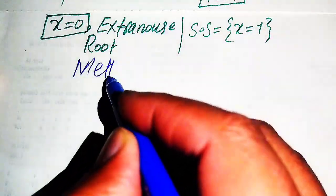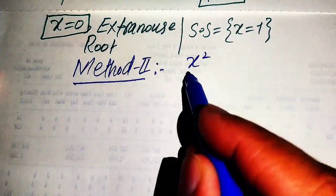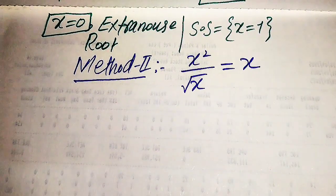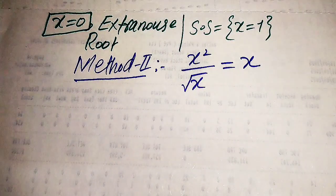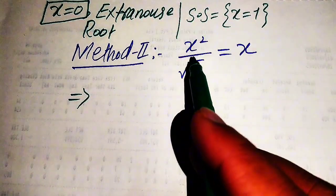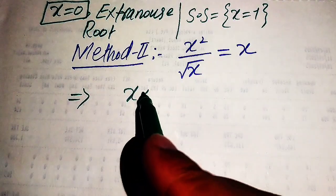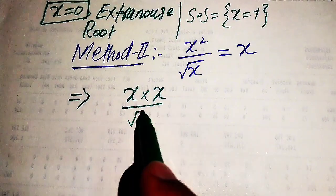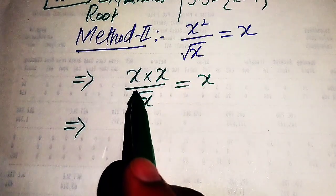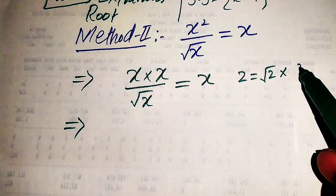Now we solve this problem using the second method. The second method is a very sharp method where we quickly get the roots. We copy down the given equation: x² divided by √x equals x. We focus on the numerator x², breaking it as x multiplied by x, divided by √x, equals x.